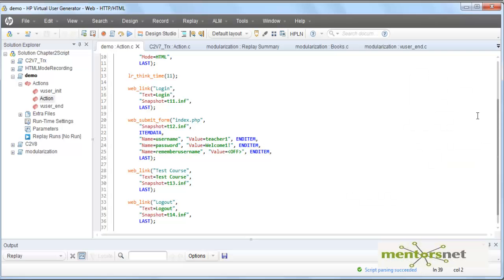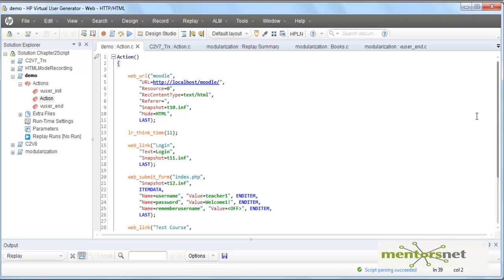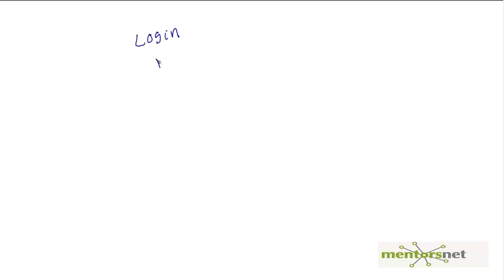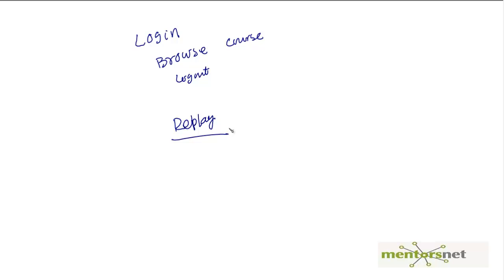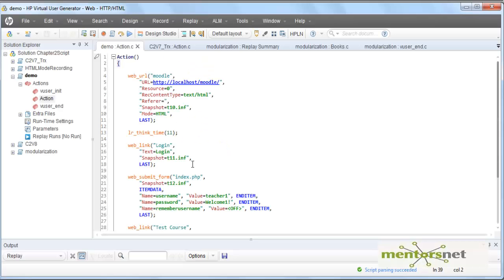Hello, welcome back. In the last set of videos we created our first VUgen script. That script records the following activities: logging in, browsing a course, and logging out. Now the script is ready, and we are going to see how to replay the script and what options we have while replaying it. Those options are called runtime settings.